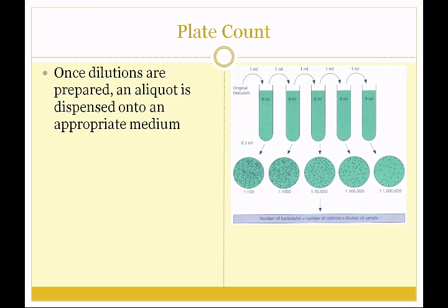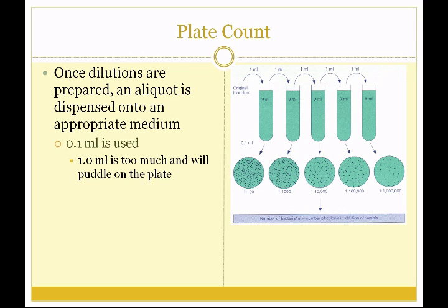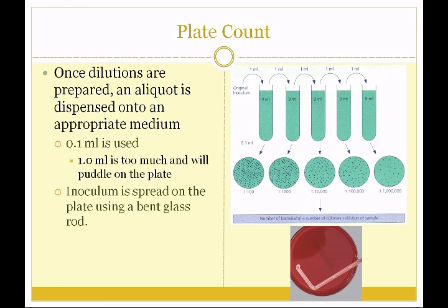Once the dilutions are prepared, we take an aliquot and dispense it onto an appropriate medium — we're going to be using TSA. We use one-tenth of a milliliter instead of a full milliliter, because a full milliliter is too much: it puddles on the plate, organisms move around during incubation, and we don't get clear colonies to count. The inoculum of 0.1 mL is spread thoroughly all over the plate using a sterile bent glass rod, and the media is then incubated in an inverted position for 24 hours.